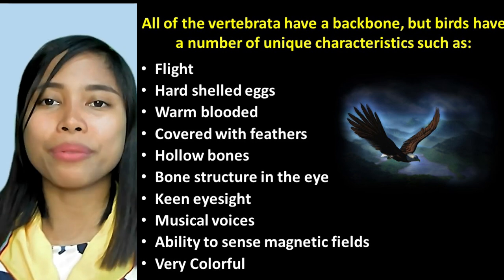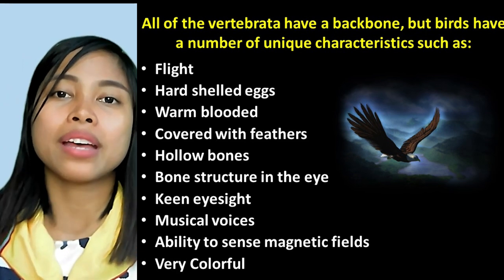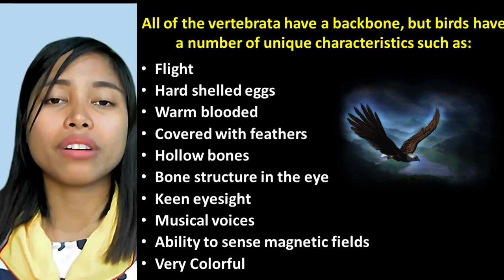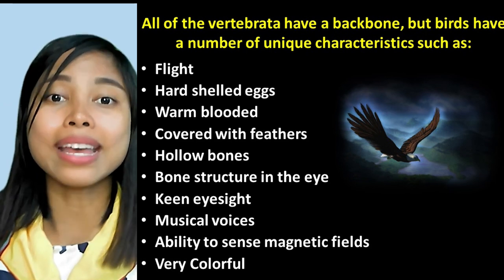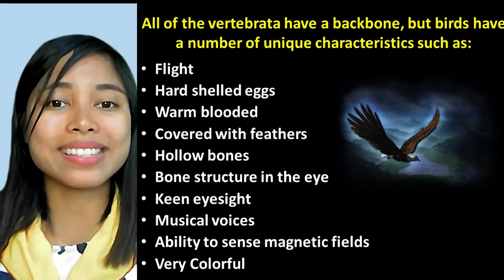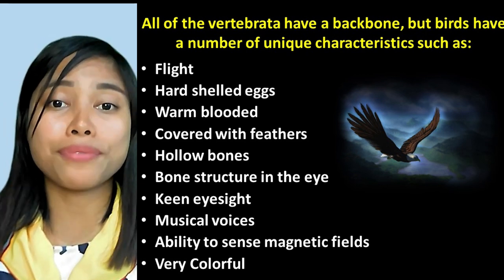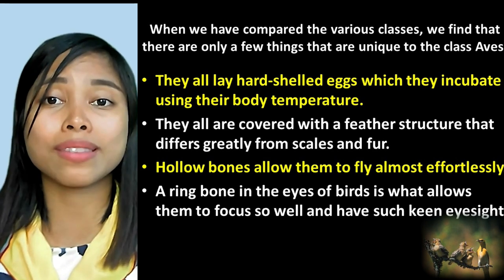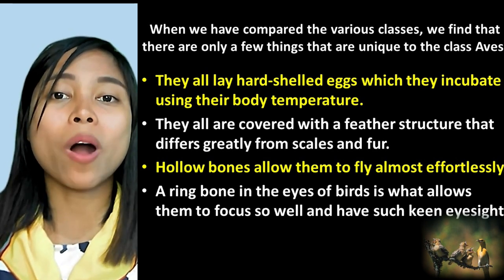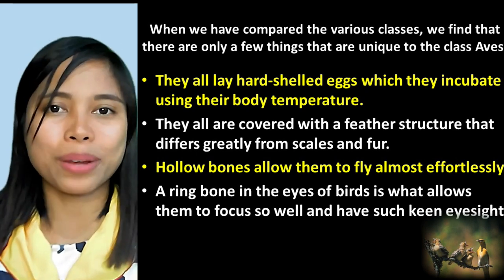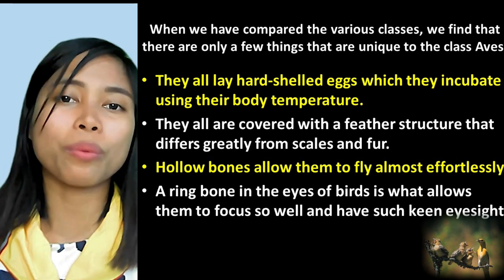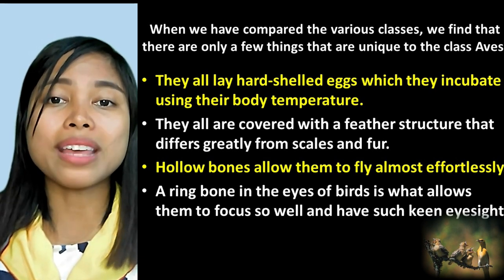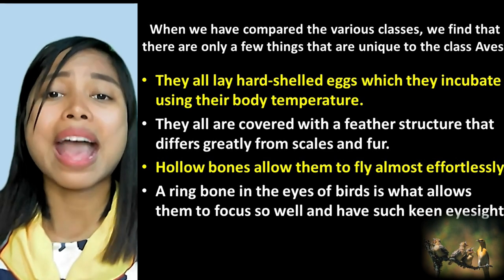Birds have a number of unique characteristics: their ability for flight, hard-shelled eggs, warm-bloodedness, feather covering, hollow bones enabling flight, a ring bone structure in the eye for keen eyesight, musical voice, ability to sense magnetic fields, and very colorful appearance. When comparing all vertebrate classes, what is truly unique to the class Aves includes hard-shelled eggs incubated using body temperature, feathers differing greatly from scales and fur, hollow bones, and a ring bone in the eye enabling exceptional focus and eyesight.